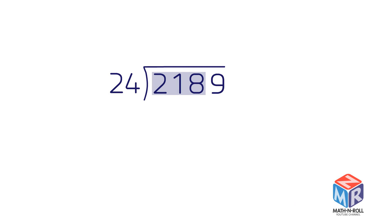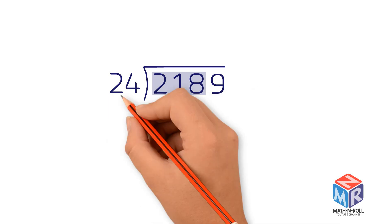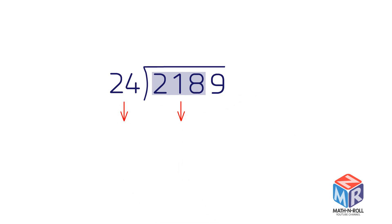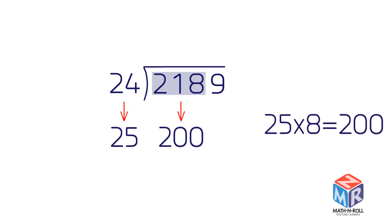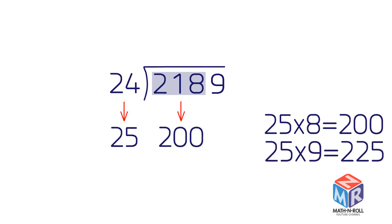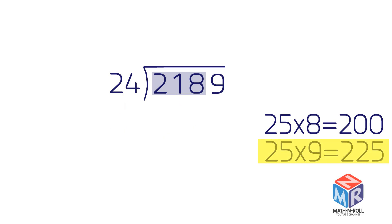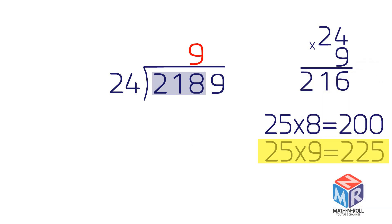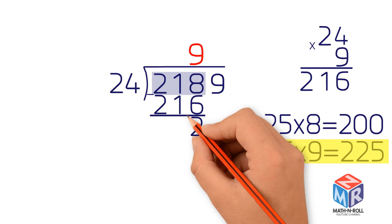Let's group 2, 1, and 8 together. Now ask how many times 24 goes into 218 — that is, what's 218 divided by 24? We must figure it out by estimating. If we change these numbers to 25 and 200, that would make it easier to estimate. 25 times 8 equals 200; 25 times 9 equals 225. Let's make 9 the estimate. Write 9 directly above the 8. Now multiply 24 times 9 to get 216. Place the product directly below the 218 and draw a line beneath it. Subtract 216 from 218 to get 2. The result should be less than the divisor. 2 is less than 24, so it's okay.